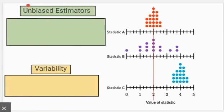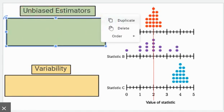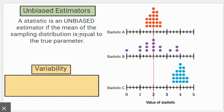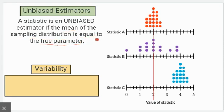The next thing we want to talk about is unbiased estimators. A statistic is called an unbiased estimator if the mean of the sampling distribution is equal to the true parameter.